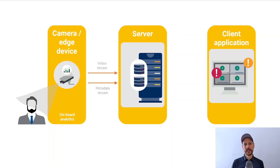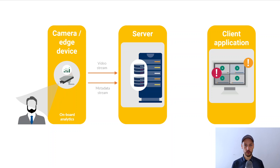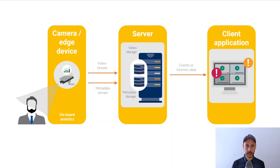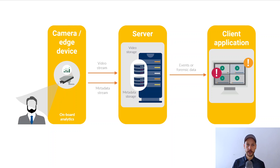The big disadvantage of the edge approach is that you're fixed to that hardware. If there's a new analytics feature, it's not easy to upgrade — you essentially have to replace the device if you need more powerful hardware, so you're less flexible. You're also limited by whatever hardware is there, so if it's not very powerful, you cannot run a lot of analytics. The video stream and metadata stream are sent to the server where they're stored, and when the client requests information, it's sent as events or forensic search data. So the camera and edge device case saves on server cost and system complexity, but is less flexible for future upgrades.